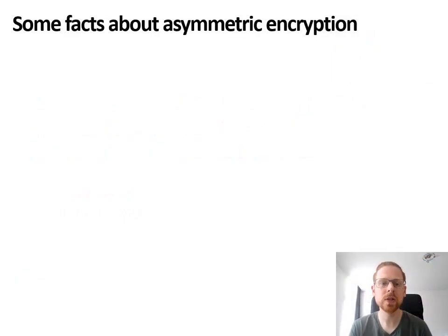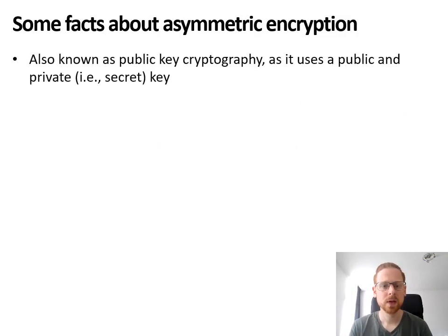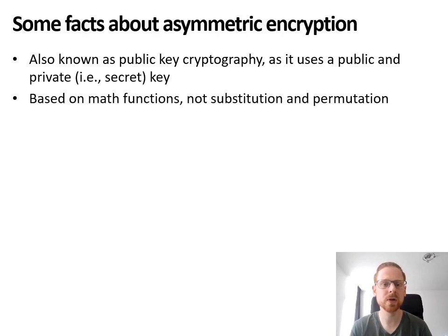Before we delve into the details, let's take a look at some basic facts about asymmetric encryption. It is also known as public key cryptography, mainly because it uses a public and a private key, in contrast to symmetric encryption, which only uses a private or secret key. It is based on radically different concepts than symmetric encryption — instead of using substitution and permutation, it uses mathematical functions.